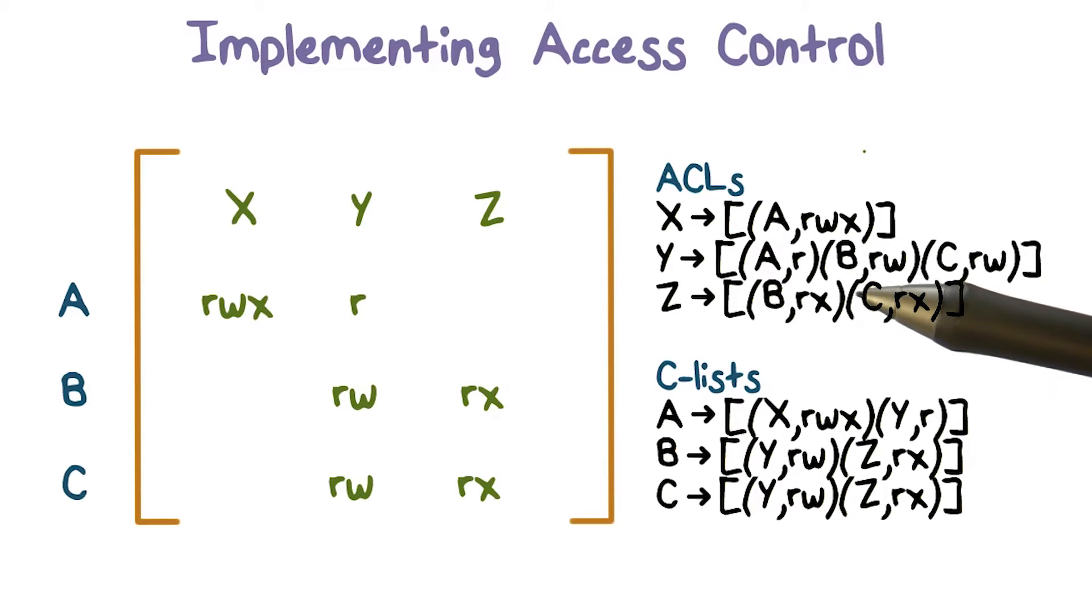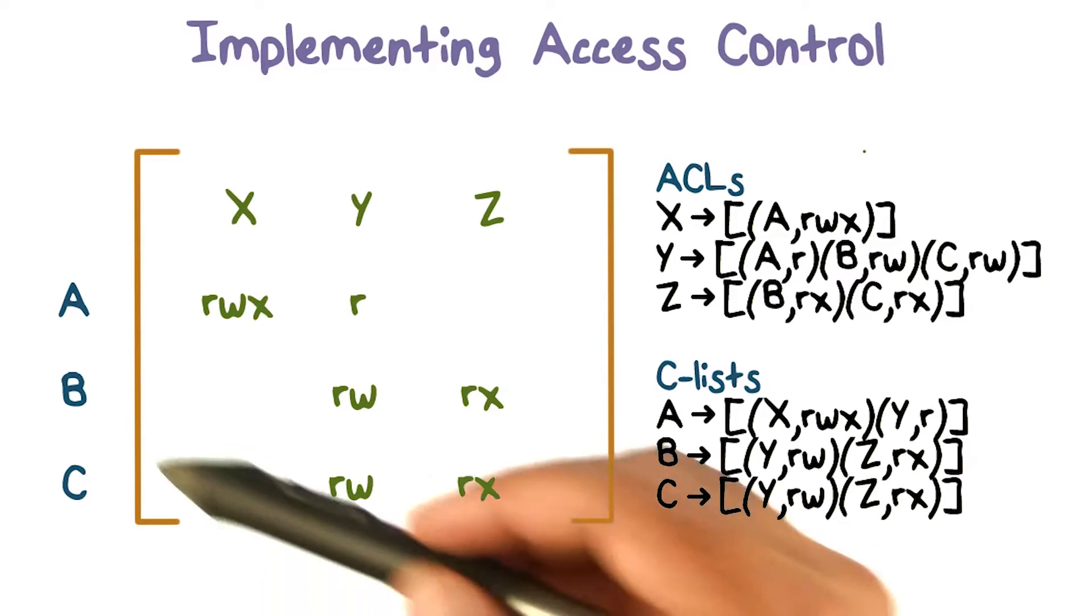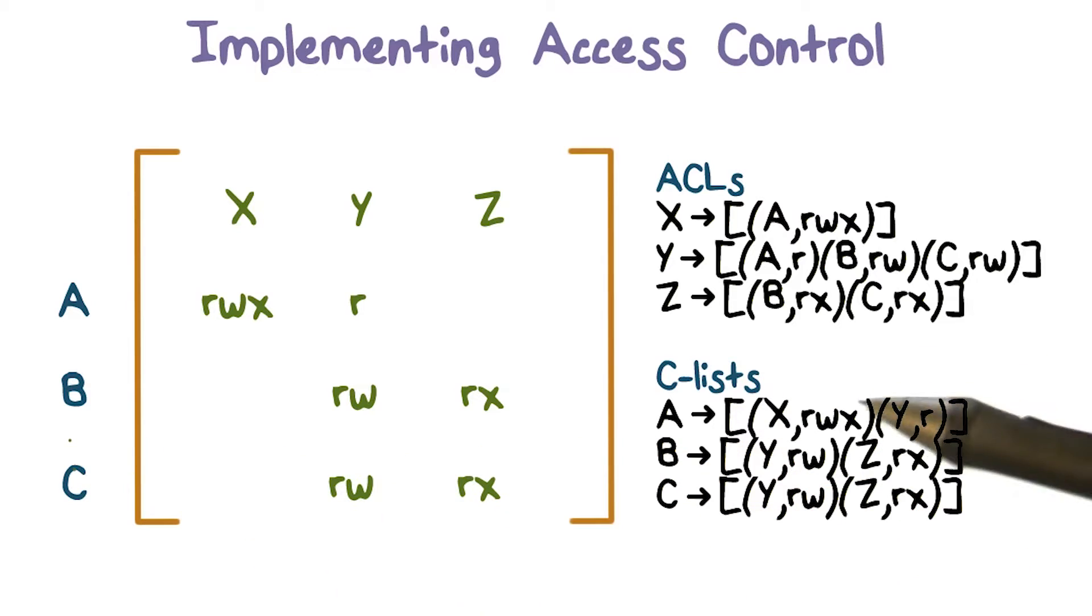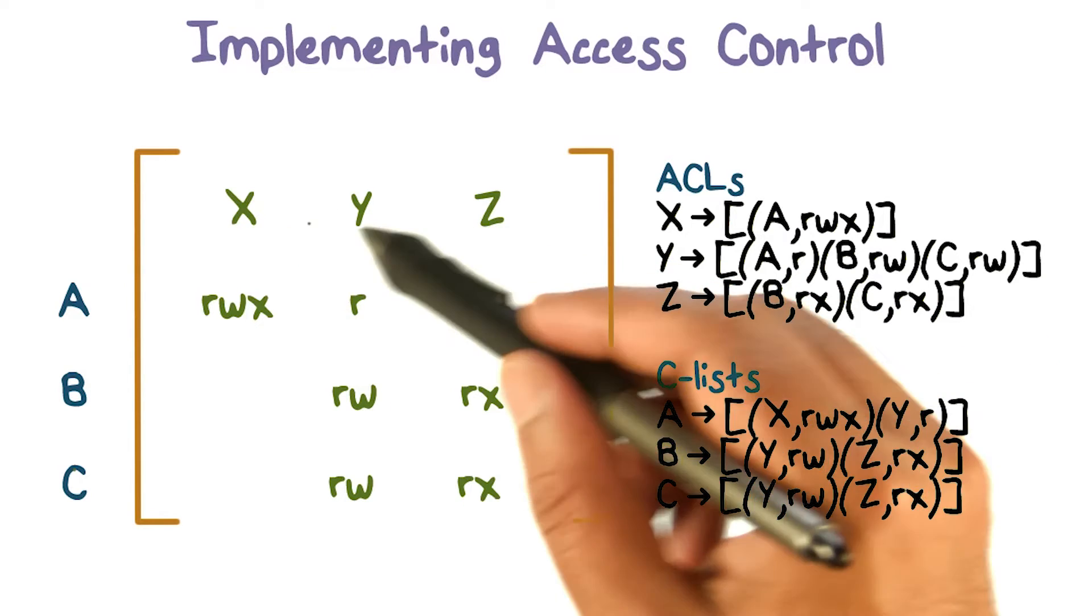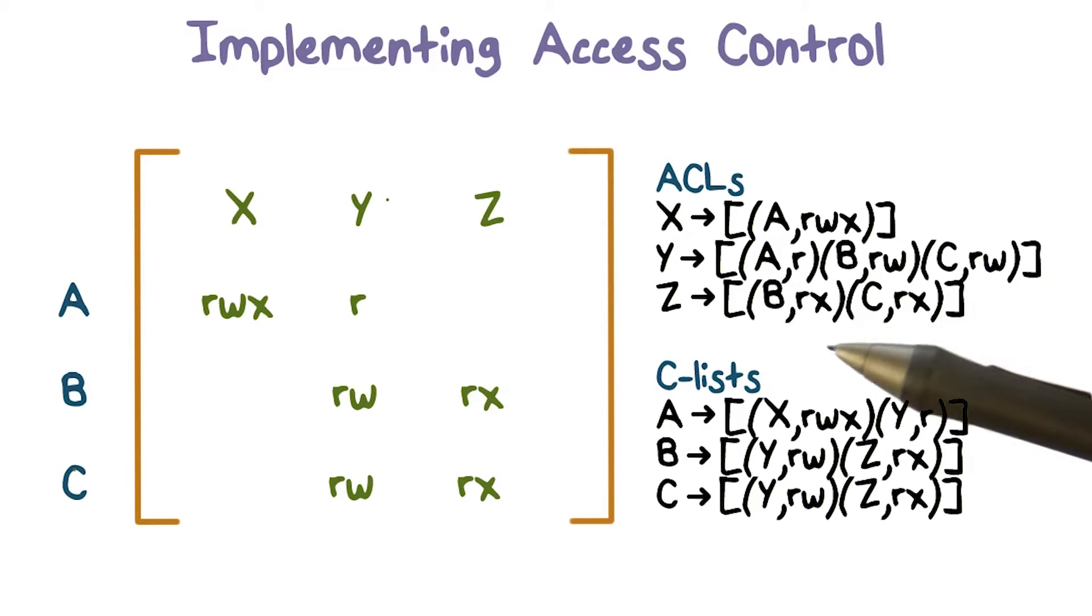The example here shows a system that has three users: A, B, and C, where rows correspond to users. We have three resources as well: x, y, and z. These are three objects of the resources we have.